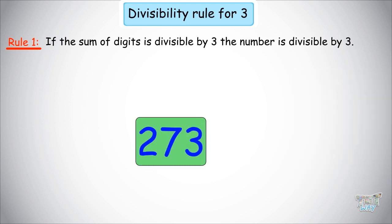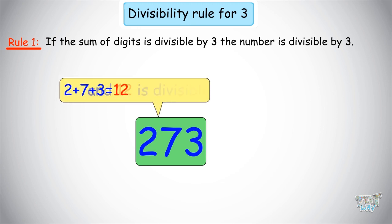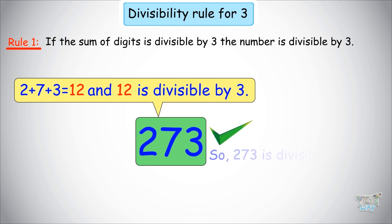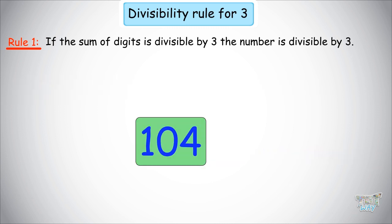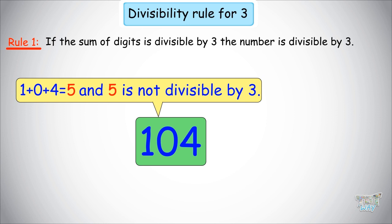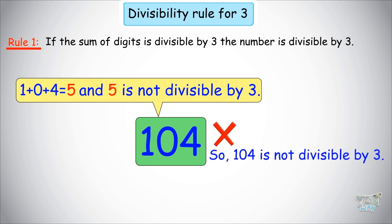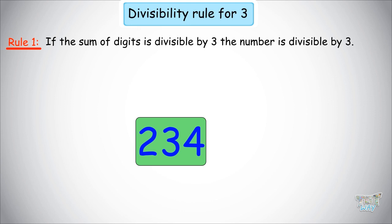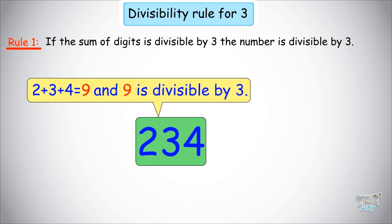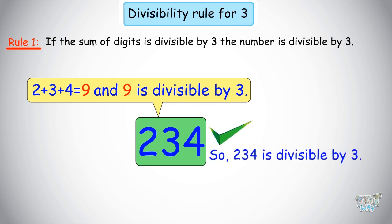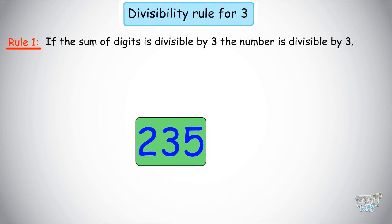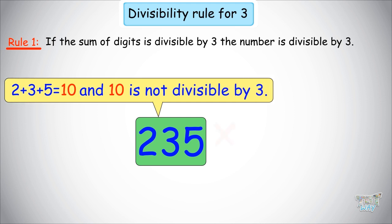Another number is 273. Let's check if this is divisible by 3. The sum of digits is 2 plus 7 plus 3 equals 12. We know 12 is divisible by 3, so the number is divisible by 3. Next is 104: 1 plus 0 plus 4 equals 5. 5 is not divisible by 3, so 104 is not divisible by 3. Next is 234: 2 plus 3 plus 4 equals 9, which is divisible by 3, so 234 is divisible by 3. Next is 235: 2 plus 3 plus 5 equals 10. 10 is not divisible by 3, so 235 is not divisible by 3.